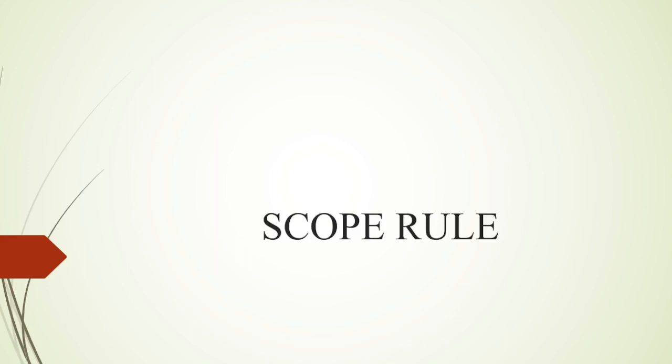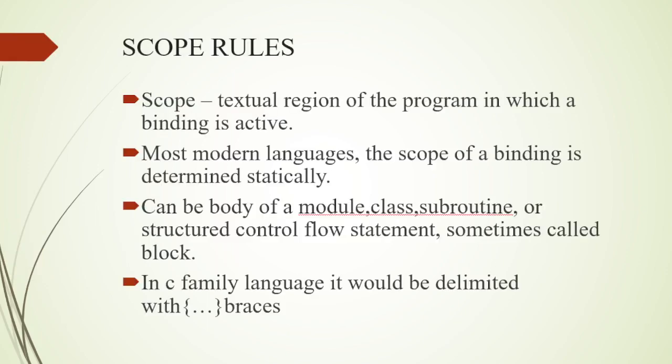Hi all, good morning. Today we are going to take the session on Scope Rules. Scope is a textual region of the program in which a binding is active. That is, a program has a portion where binding is active — that portion is called scope.